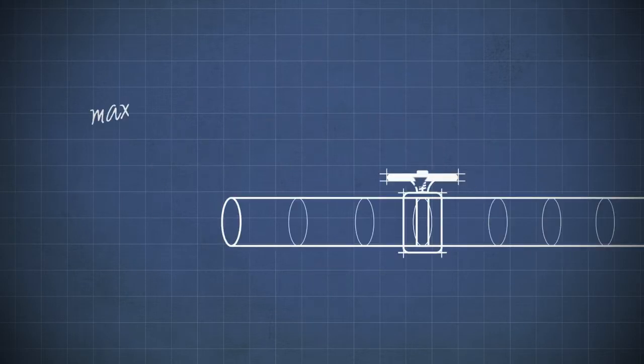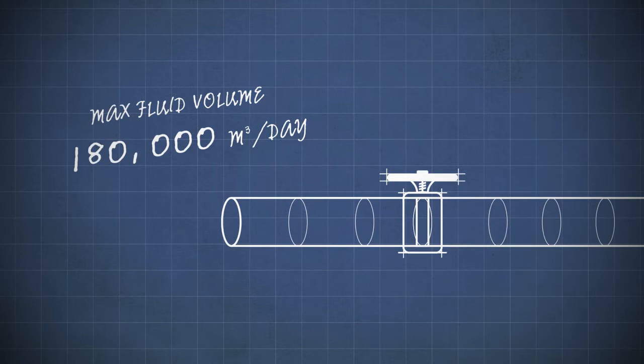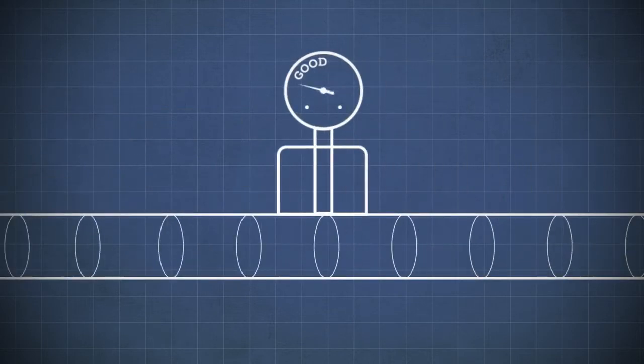Then, a flow analysis determines the diameter of the pipe and pressure needed to move the desired volume. Material choice answers questions like, how strong does the pipe need to be to withstand the pressure needed, and how will the pipe stand up to operating hazards.